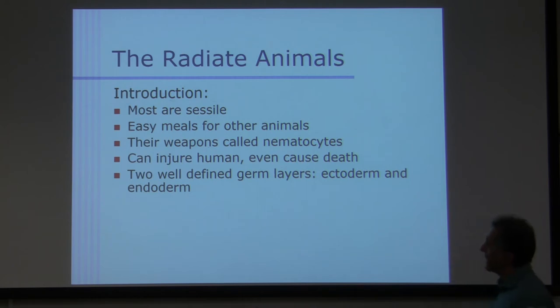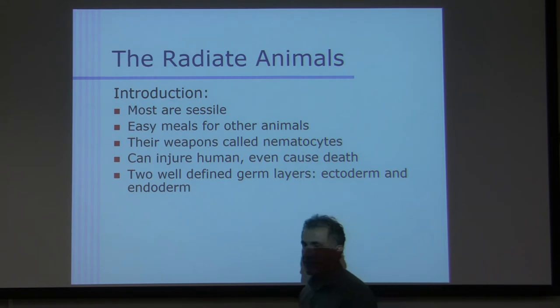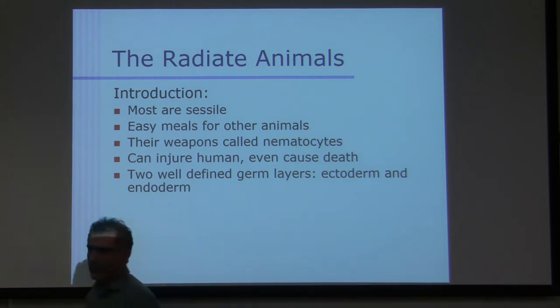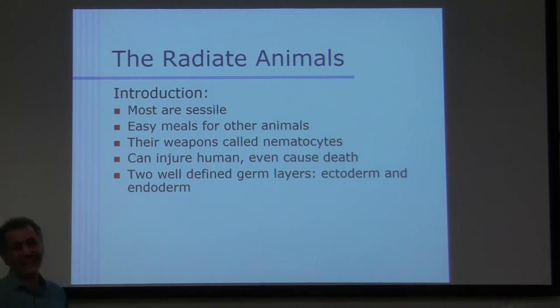Two well-defined germ layers, ectoderm and endoderm. Do sponges have germ layers? No. Protista have germ layers? No. Right, you remember that? So Protista do not have germ layers, sponges do not have germ layers, but these guys have germ layers, ectoderm and endoderm. So they are what? Diploblastic. Diploblastic type of animal. Thank you. Diploblastic animals.